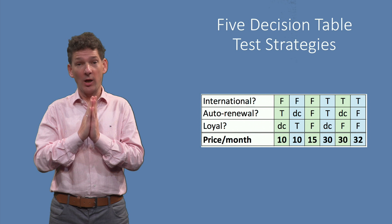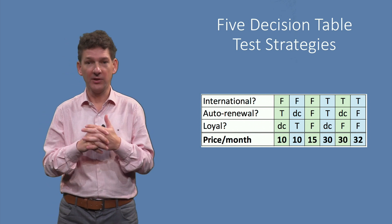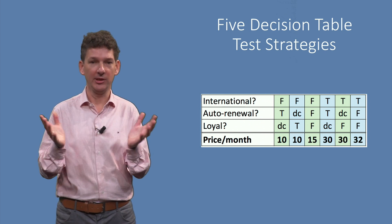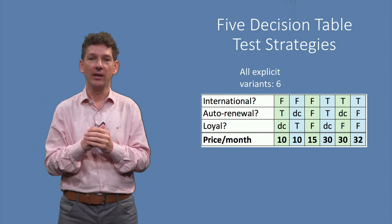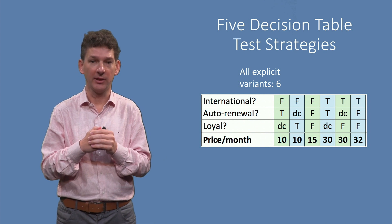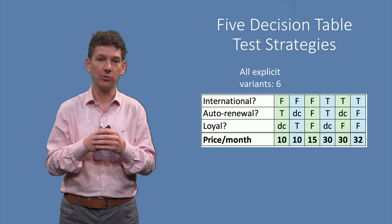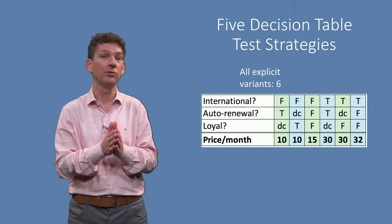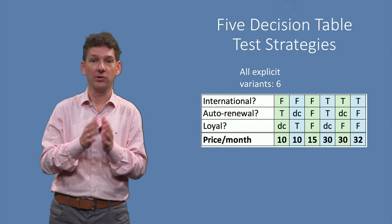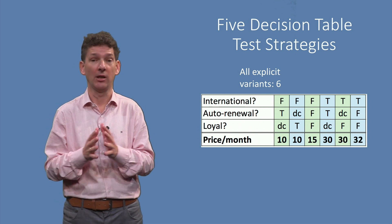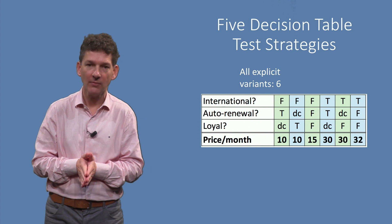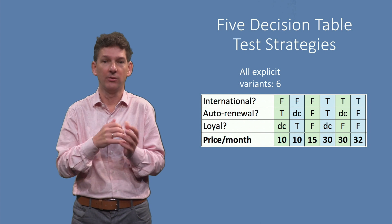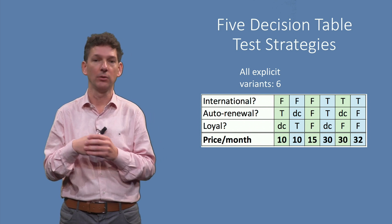To answer such questions, I will discuss five testing strategies with you. A natural testing strategy, called all explicit variants, is to create one test case per variant listed in the table. This helps to ensure that the decision logic implemented for these cases leads to the correct action. For our example, this gives six test cases, as there are six columns. This strategy tests all explicitly defined variants,